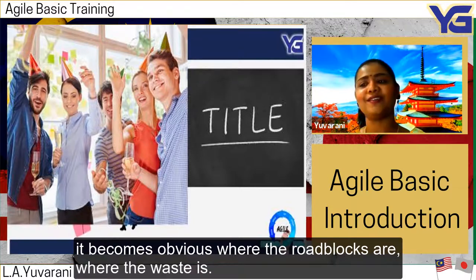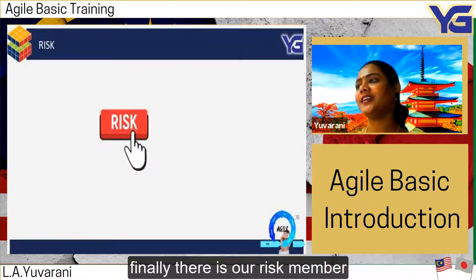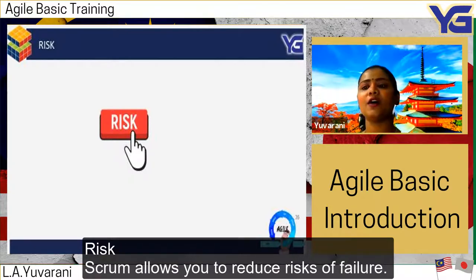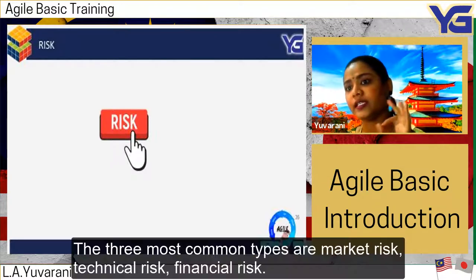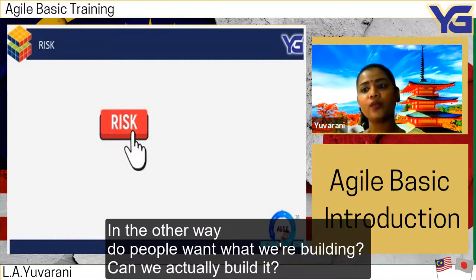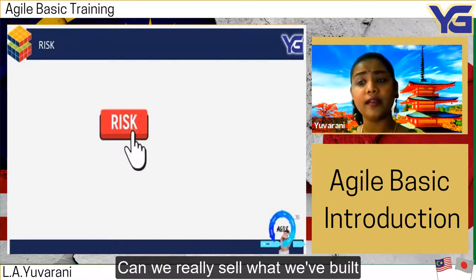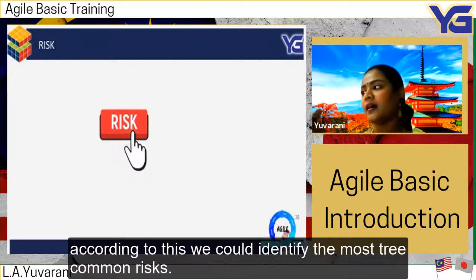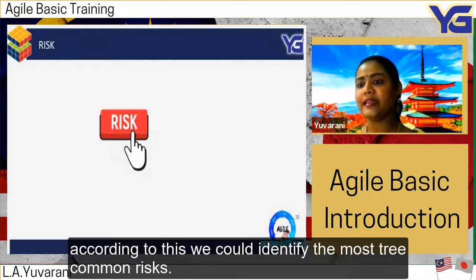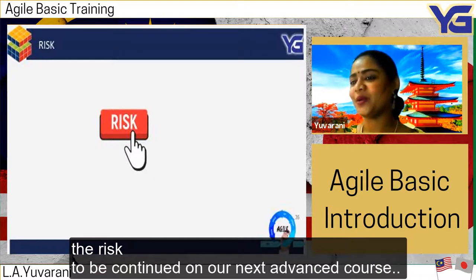Scrum allows us to reduce risk of failure. The three most common types of risk are market risk, technical risk, and financial risk — or in other words: do people want what we are developing, can we actually build it, and can we sustain what we have built? This risk management framework helps identify the most common risks. Details will be continued in our advanced course.